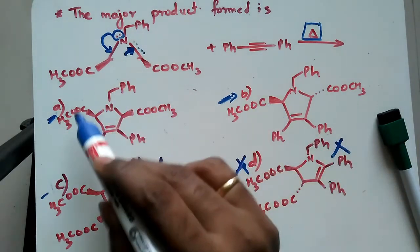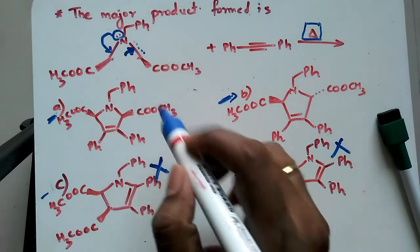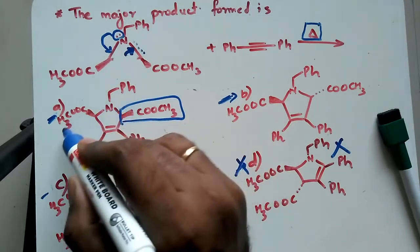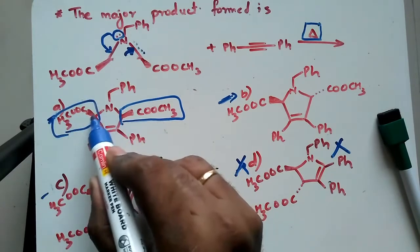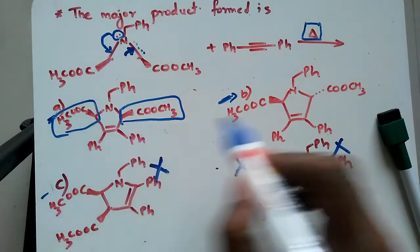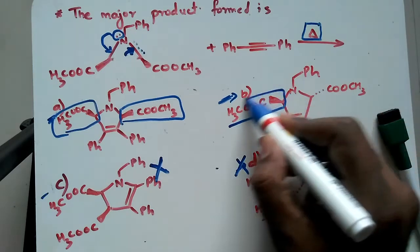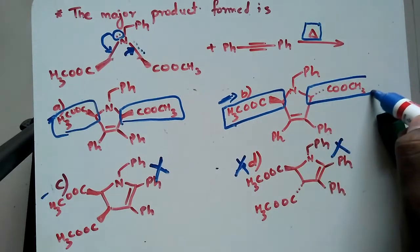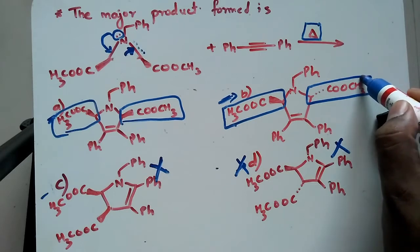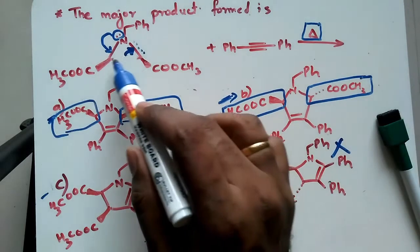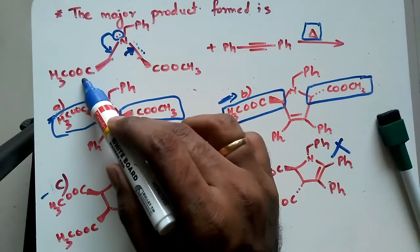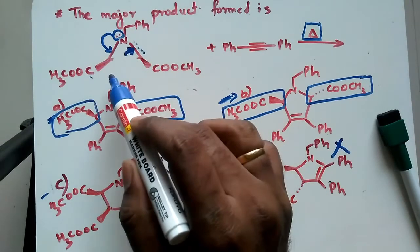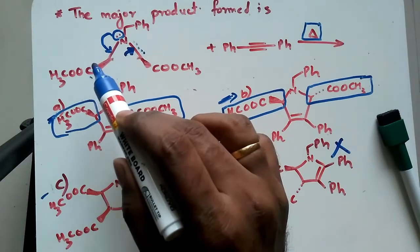Among option A and option B, they look similar except for the fact that in option A both groups are above the plane of the paper, whereas in option B this group is above the plane of the paper and this particular group is below the plane of the paper. We have to check whether both groups go above the plane or one goes above and one goes below.